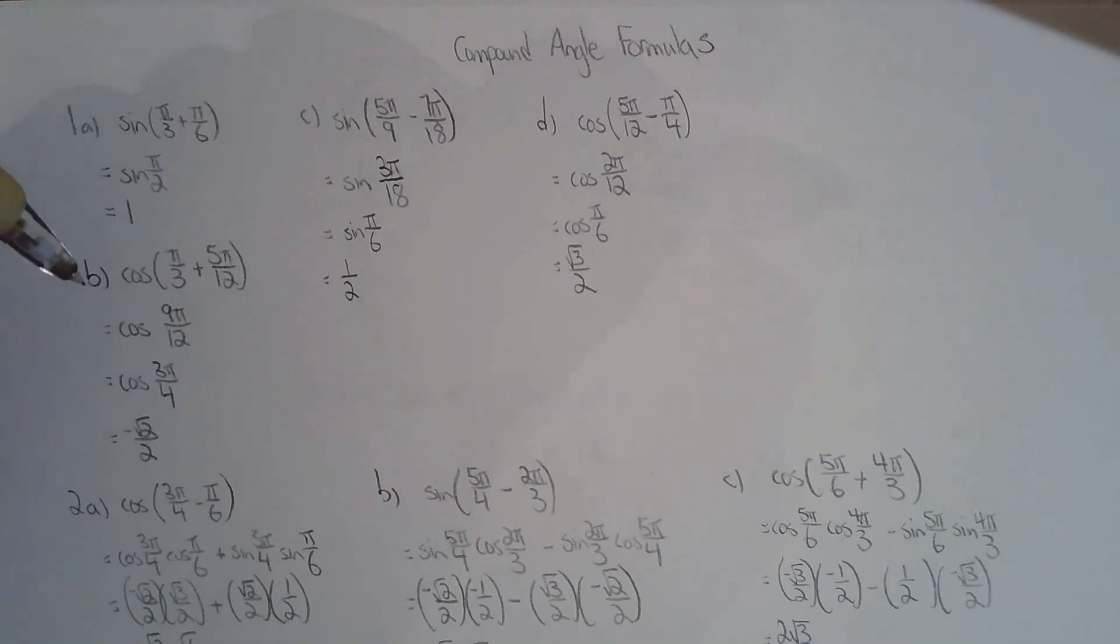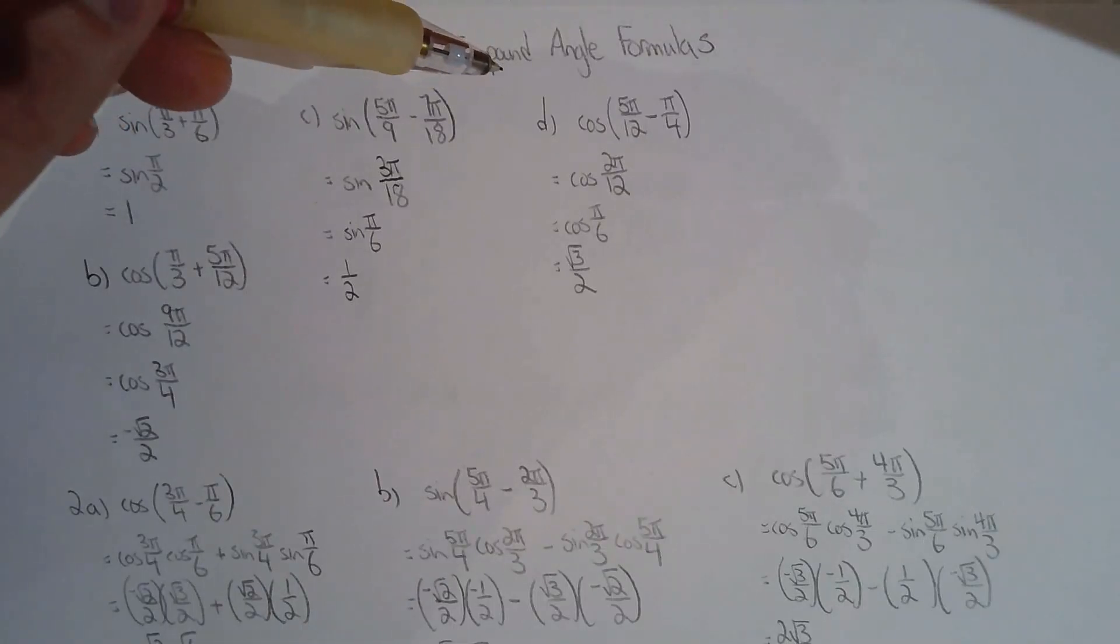For b, if you look at what's given to you, you can express it as a single trig function using the addition formula for cosine. For c, you can express it as a single trig function using the subtraction formula for sine. For d, you can express it as a single trig function using the subtraction formula for cosine.